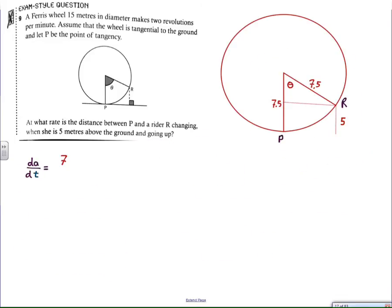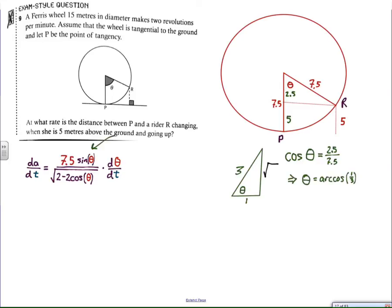Let's look at this picture with the relevant information. The distance from here to here is 5, therefore the distance from the center of the circle down to where the rider's level is, is 2.5. I look at my formula for dA/dt and see there's a cosine of theta in it. When the rider is 5 feet above the ground, I draw this right triangle. The cosine of theta is going to be 1/3. Theta is the arc cosine of 1/3.